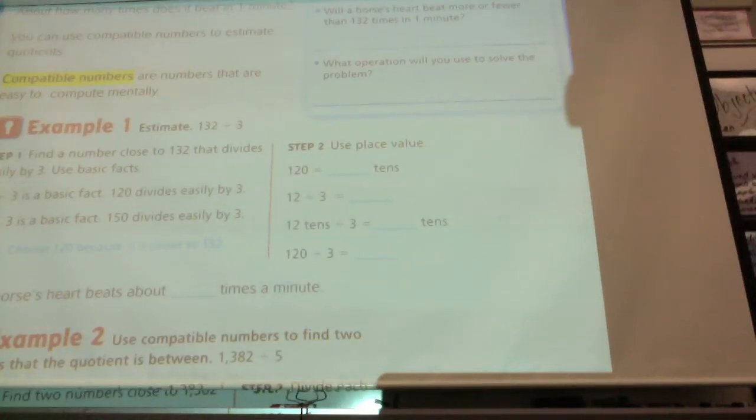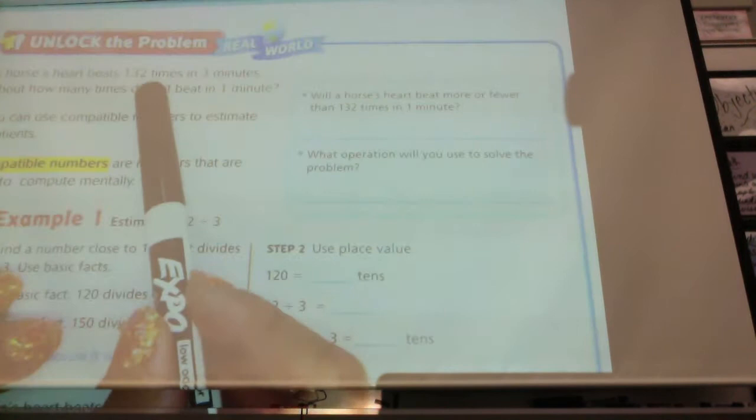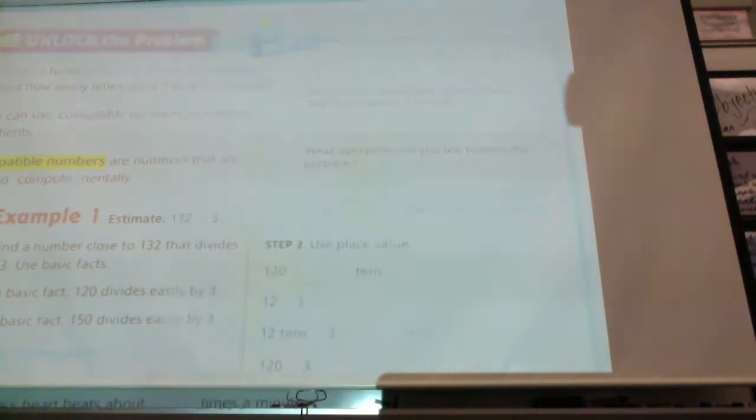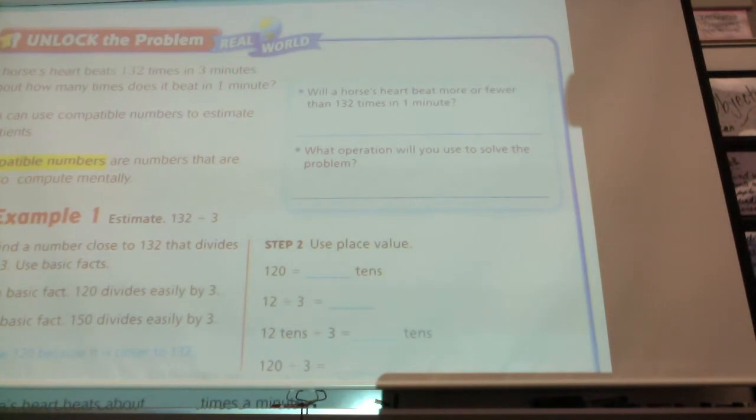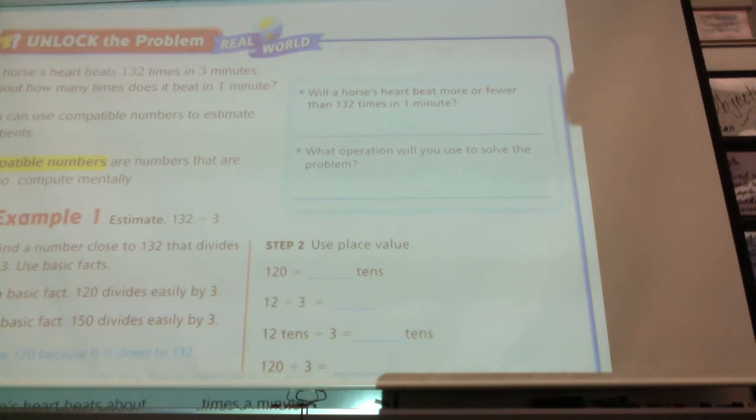A horse's heart beats 132 times in 3 minutes. About how many times does it beat in 1 minute? So if 3 minutes it does 132, about how much is it if you do 1 minute? You can use compatible numbers to estimate because the question says about how many times. We can estimate, so we can use compatible numbers.